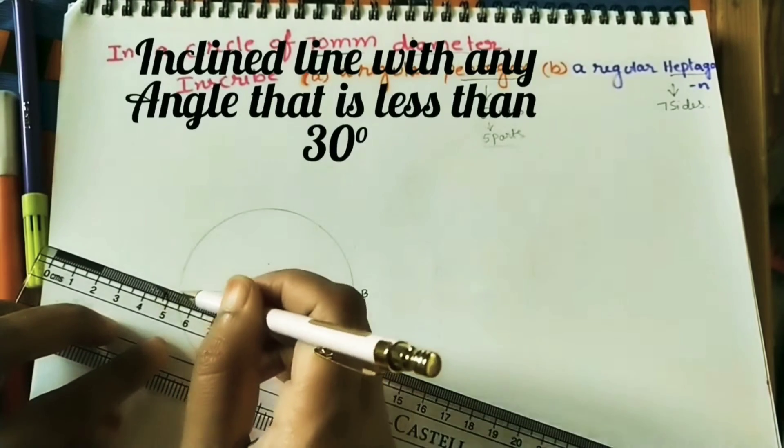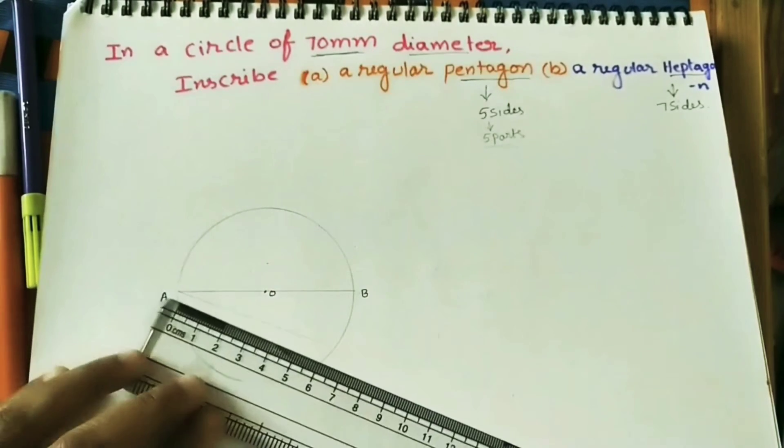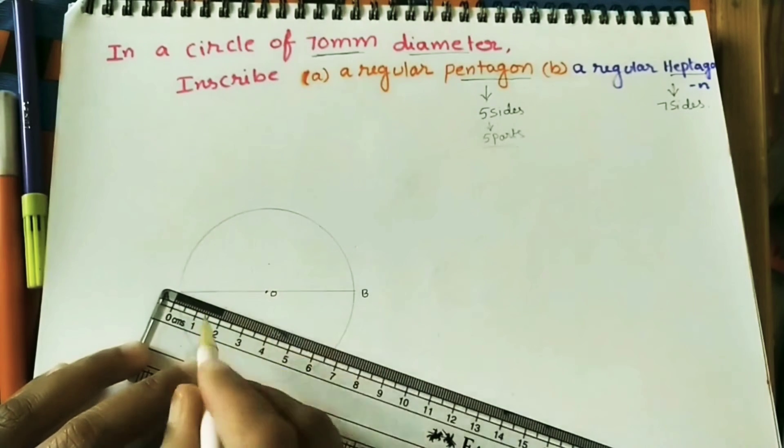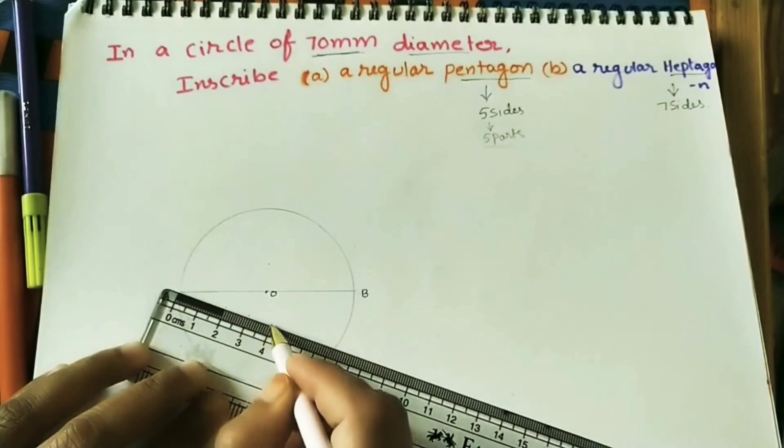The angle should be less than 30. Do approximately. And divide this line into 5 parts. We can take any radius. Here I am taking 1cm. 5 parts.